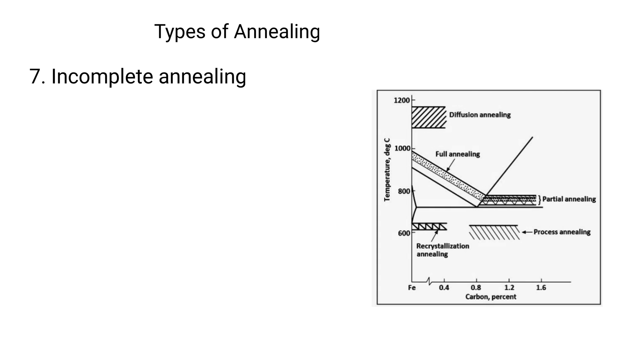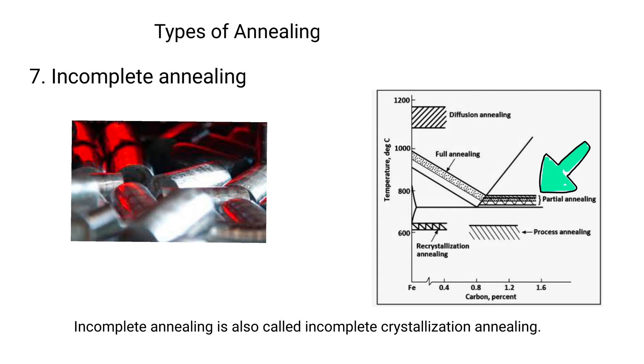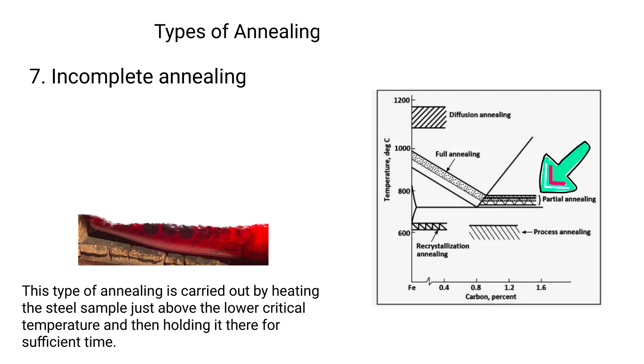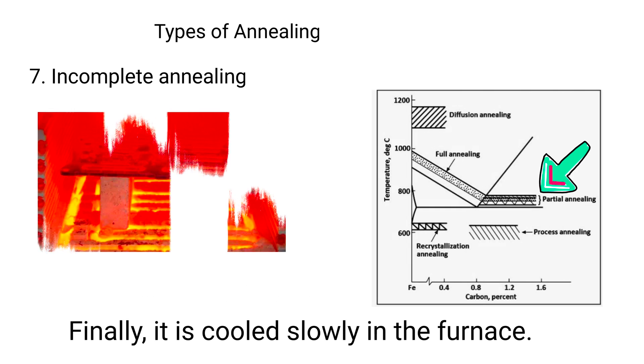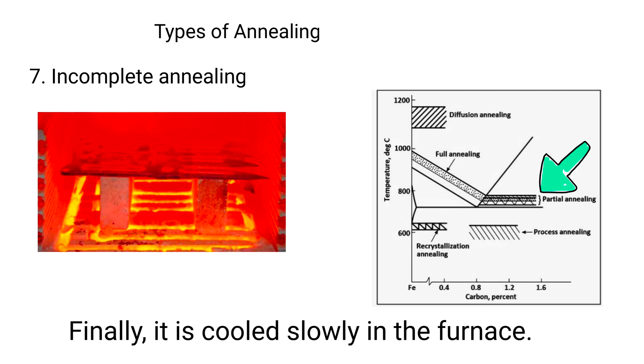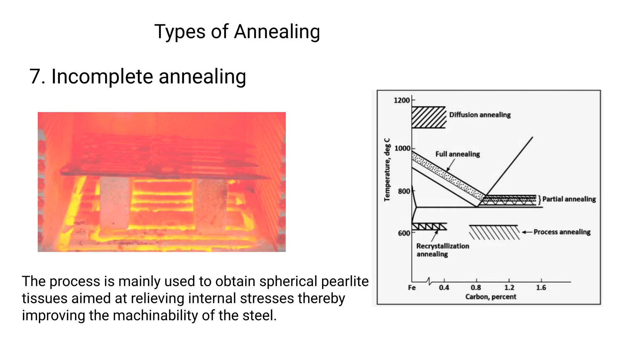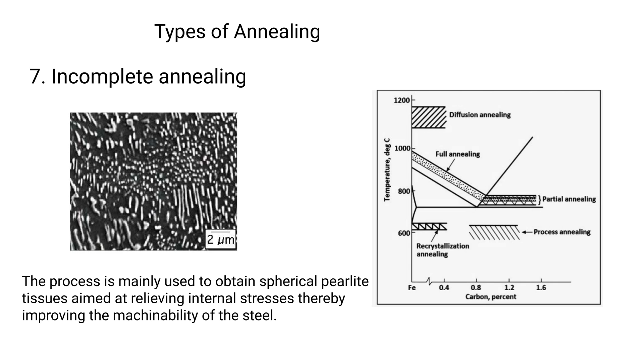7. Incomplete annealing. Incomplete annealing is also called incomplete crystallization annealing. This type of annealing is carried out by heating the steel sample just above the lower critical temperature and then holding it there for sufficient time. Finally, it is cooled slowly in the furnace. The process is mainly used to obtain spherical pearlite tissues aimed at relieving internal stresses, thereby improving the machinability of the steel.